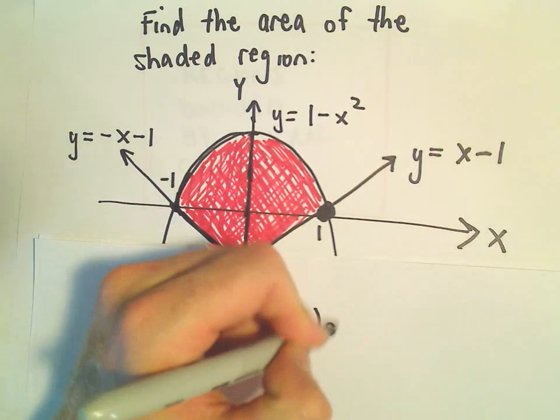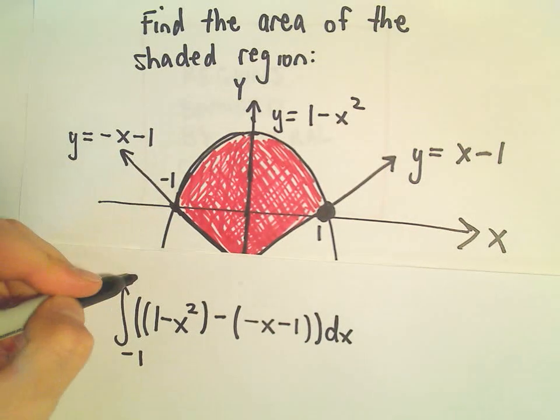So all of that dx, and then we would be integrating from negative 1 to 0.